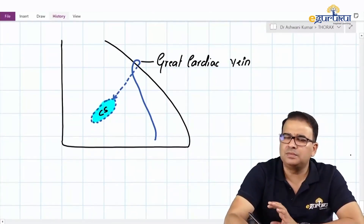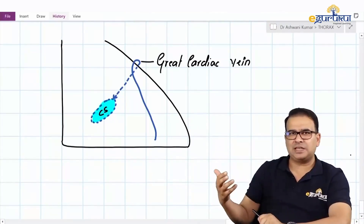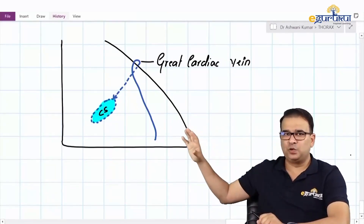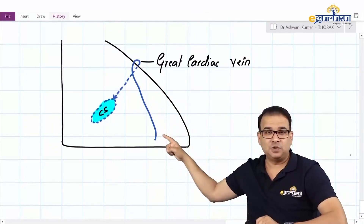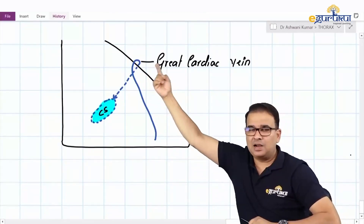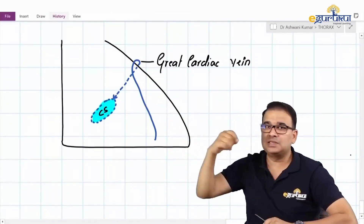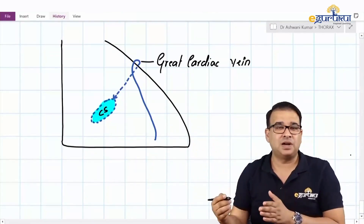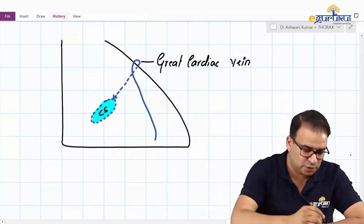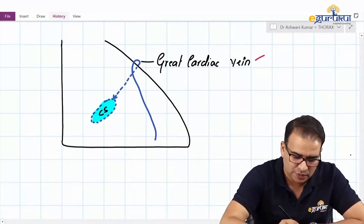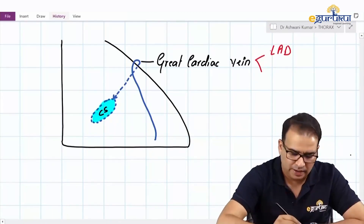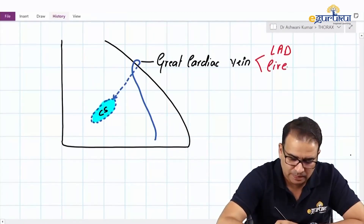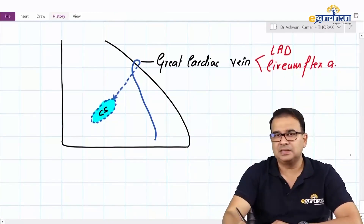Now, which artery accompanies the great cardiac vein? Because we're viewing from the anterior aspect, it's easy to see. The major artery in this groove is the left anterior descending artery. The artery winding around the left border is the circumflex artery. So if asked which major arteries run with the great cardiac vein, the answer is the left anterior descending artery and the circumflex artery.